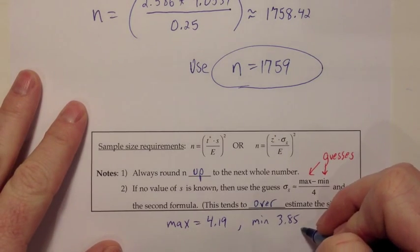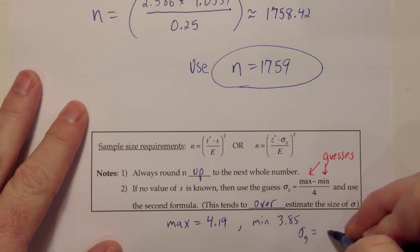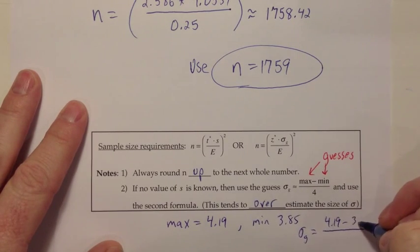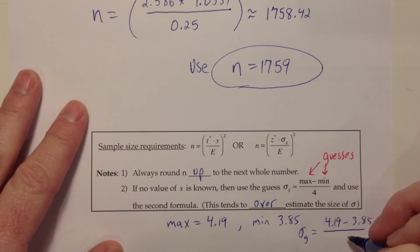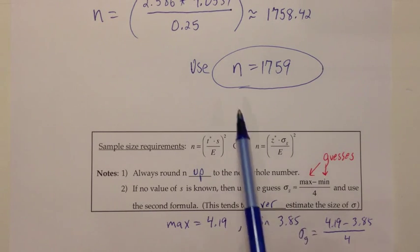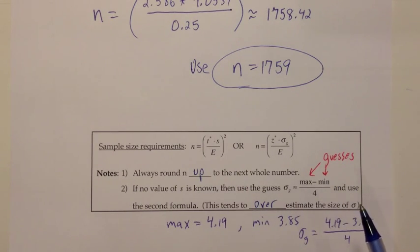Then you could use that and say, okay, then my guess at the standard deviation would be 4.19 minus 3.85 divided by 4. You could go to the calculator and get your estimate. So it's just a guess, but at least it gives us a starting place on what type sample size we should use, roughly the size of it. It tends to be a process that, while it puts us in the right ballpark, usually creates a sample size a little bigger than we need. That's kind of a good type of error to have, a sample size that's a little too big instead of a little too small.